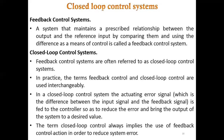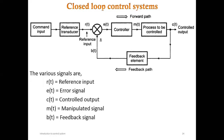The actuating error signal is the heart of a closed loop or feedback control system — it reduces or varies the input parameter, which directly varies the output parameter. In the block diagram: R(t) is the reference input, E(t) is the error signal, C(t) is the controlled output, M(t) is the manipulated signal, and B(t) is the feedback signal. The system includes a reference transducer, controller, process to be controlled, and a feedback element.